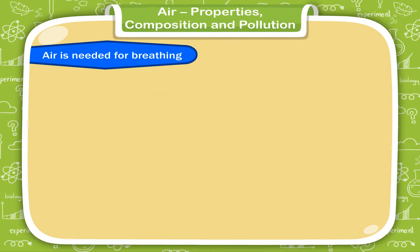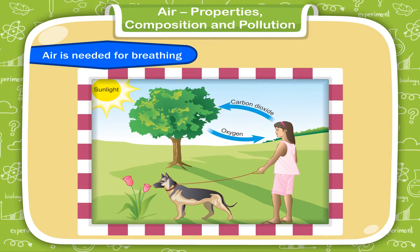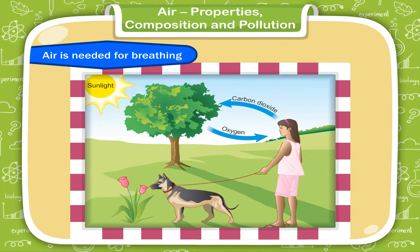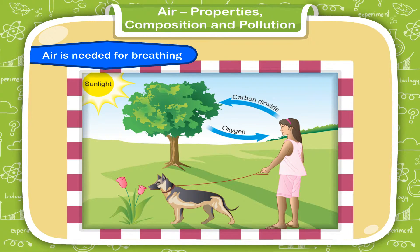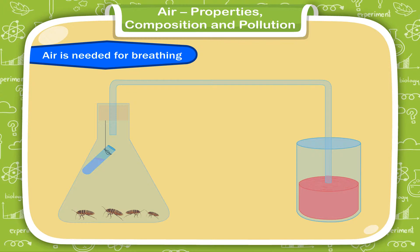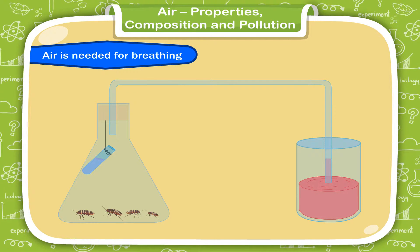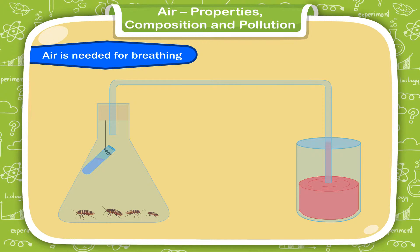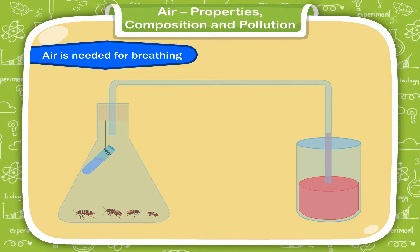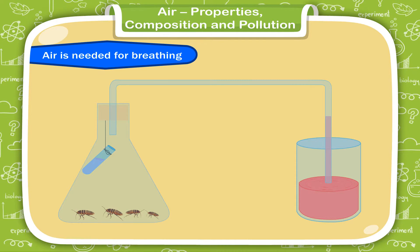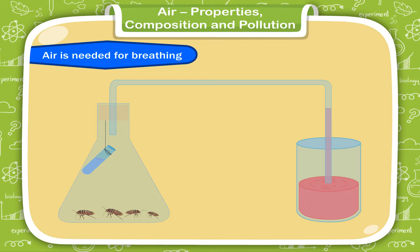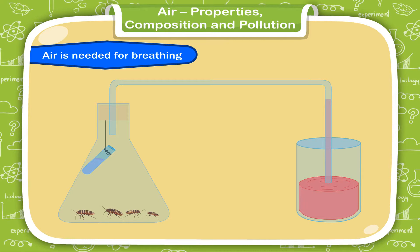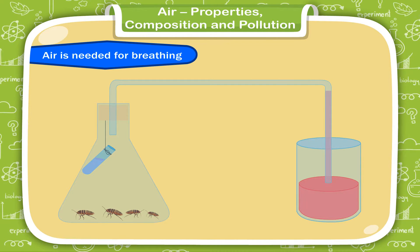Air is needed for breathing. The oxygen in the air is used by all land animals and humans to breathe and stay alive. Carbon dioxide is given out during breathing. You can show this by keeping some insects like cockroaches in a closed conical flask with a test tube containing some potassium hydroxide to absorb the carbon dioxide given out. Connect this flask with a tube passing through coloured water. After two days, you will notice that the coloured water in the air supply tube begins to rise. The cockroaches use oxygen of the air while breathing and the air from the supply tube is pulled into the flask, making the coloured water column rise in the tube.